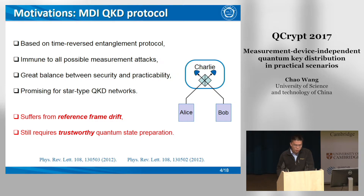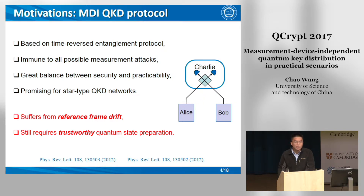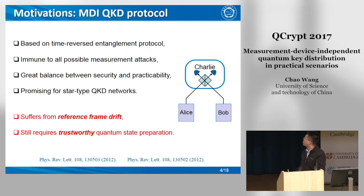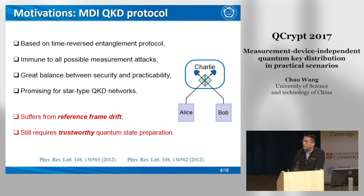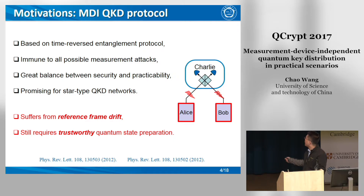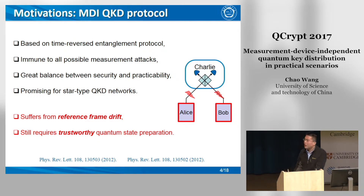Comparing to conventional QKD protocols and full device-independent protocols, MDI-QKD provides a great balance between security and practicality, and it is very promising for star-type quantum secure networks where the detectors can be deployed as a shared server, while the clients only hold quantum state preparation devices. However, the reference frame shifts and imperfections of the source sites all have influences on the final security as well as the performance of the practical MDI system.